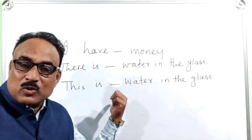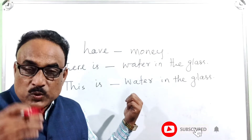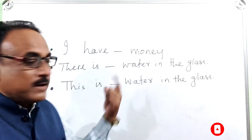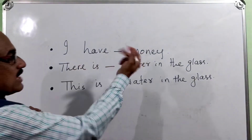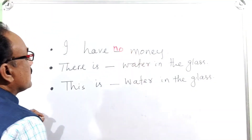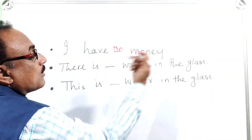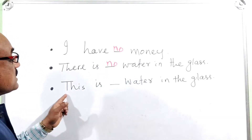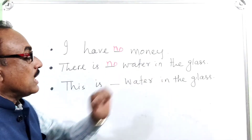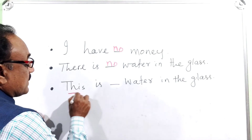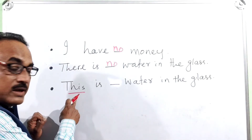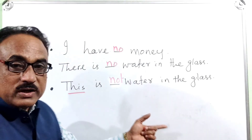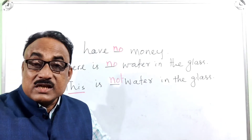Now let's answer the first questions. 'I have no money' — no article before money, so we use 'no.' 'There is no water in the glass' — no article, so 'no.' 'This is not water in the glass' — 'this is' is a demonstrative, and since it is specific, we use 'not.'